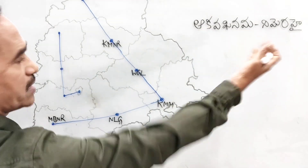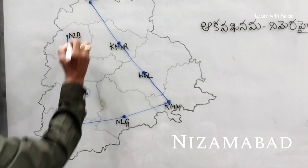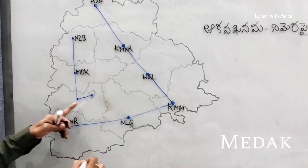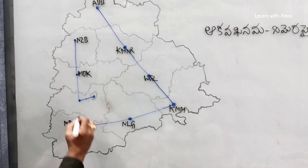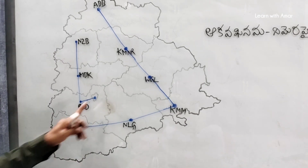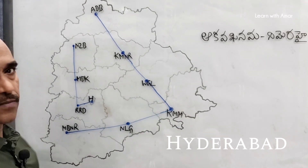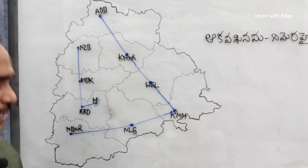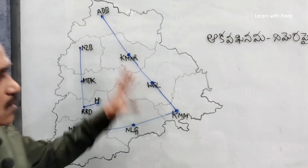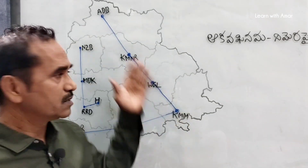Now we go to the second direction: Ni Me Ra Hai. Ni for Nizamabad, Me for Medak, Ra for Rangareddy, and Hai for Hyderabad. This completes the first step. You do practice — write the full name of each district. This is the first step.